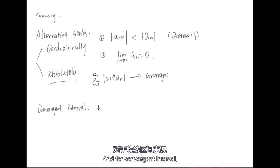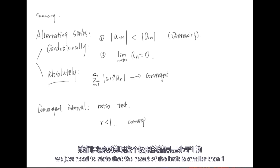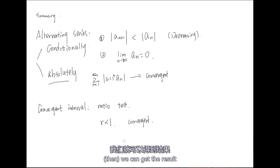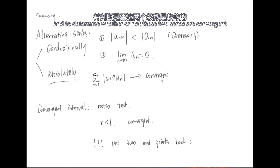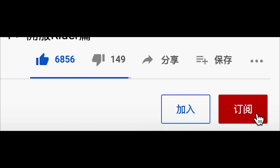For convergent interval, we always use the ratio test. Because if r is smaller than 1 the series is convergent, we just need the result of the limit to be smaller than 1, and then solve the inequality to get the result. But don't forget to put the two endpoints back into the series and determine whether or not those series are convergent — this is really important and most students forget this step. If you are interested in our videos, please leave a like and subscribe to our channel.